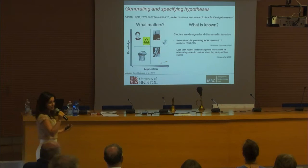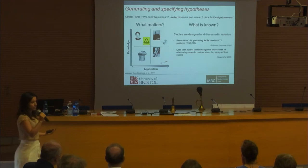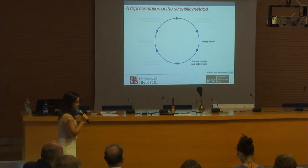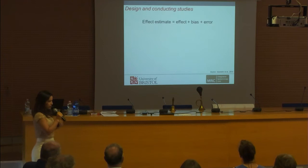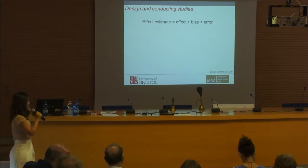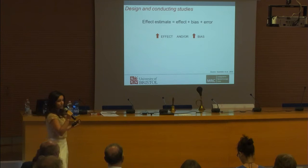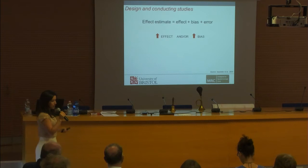Less than half of trial investigators were aware of relevant systematic reviews in their own field when designing their trials. This represents a big waste of resources and potentially results in unethical and unnecessary studies. Moving on to problems in designing and conducting studies: the estimates we get are a result of a real effect that may or may not exist, but also bias and error. You could have completely spurious results just because of bias.